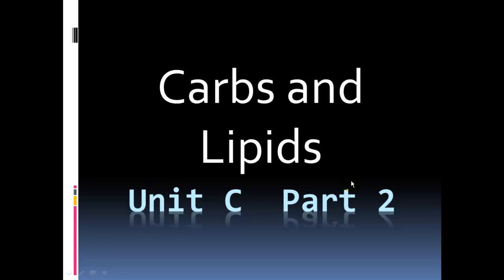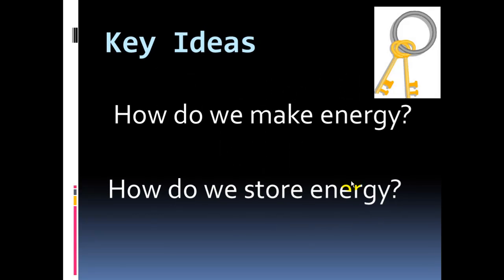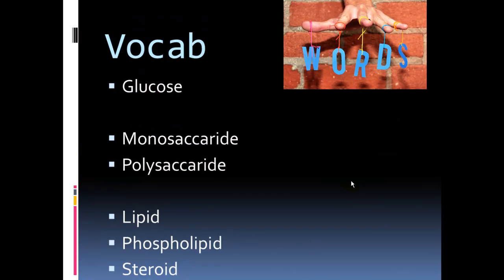Okay, this is Unit C, Part 2. In this screencast, we're going to look at carbohydrates and lipids. So the key idea that's going to show up in this screencast, how do we make energy? How do we make ATP energy in our mitochondria? What do we use? What do we burn? And then how do we store energy? When we ingest too much energy, what kind of molecule are we going to store that energy in?